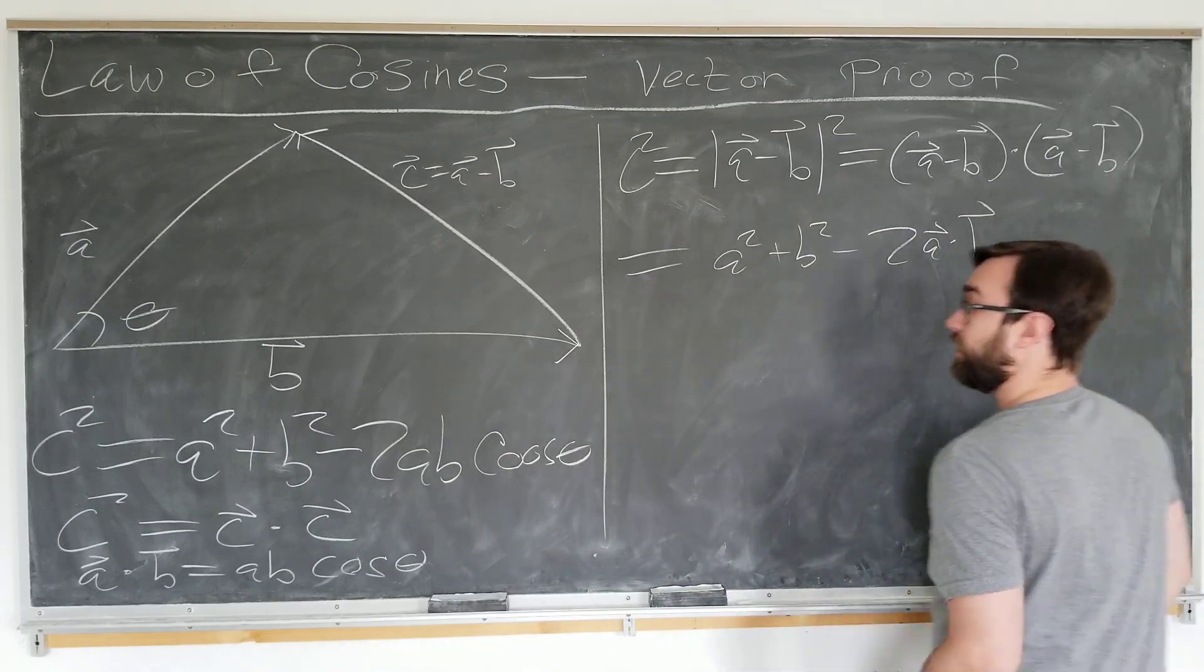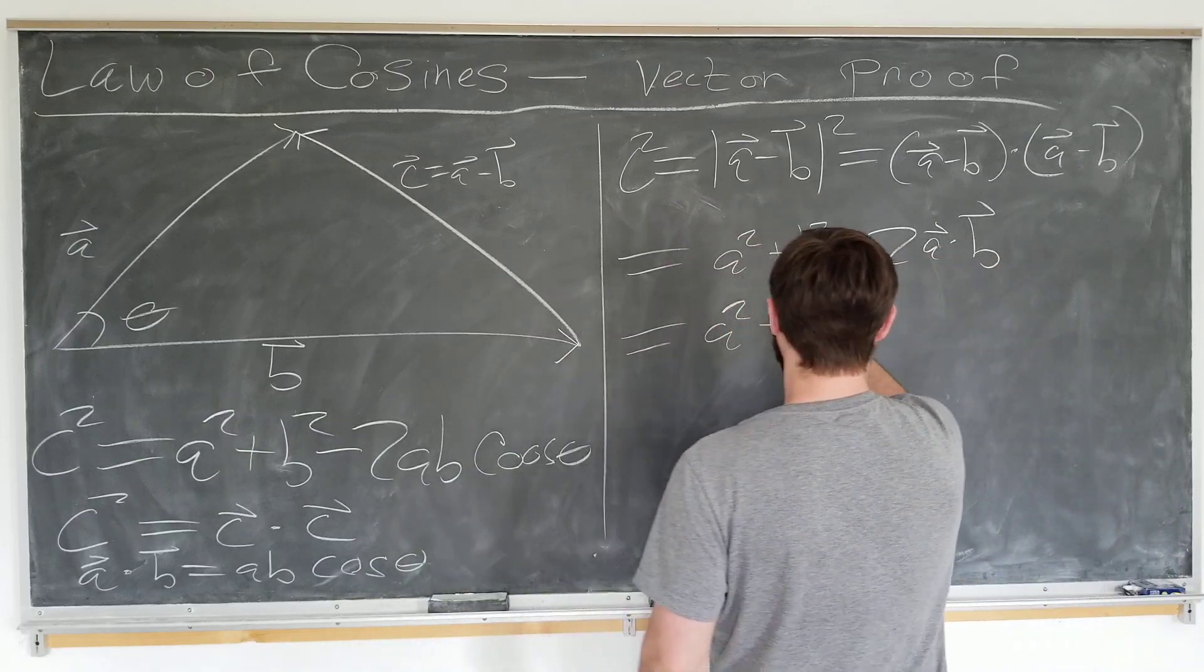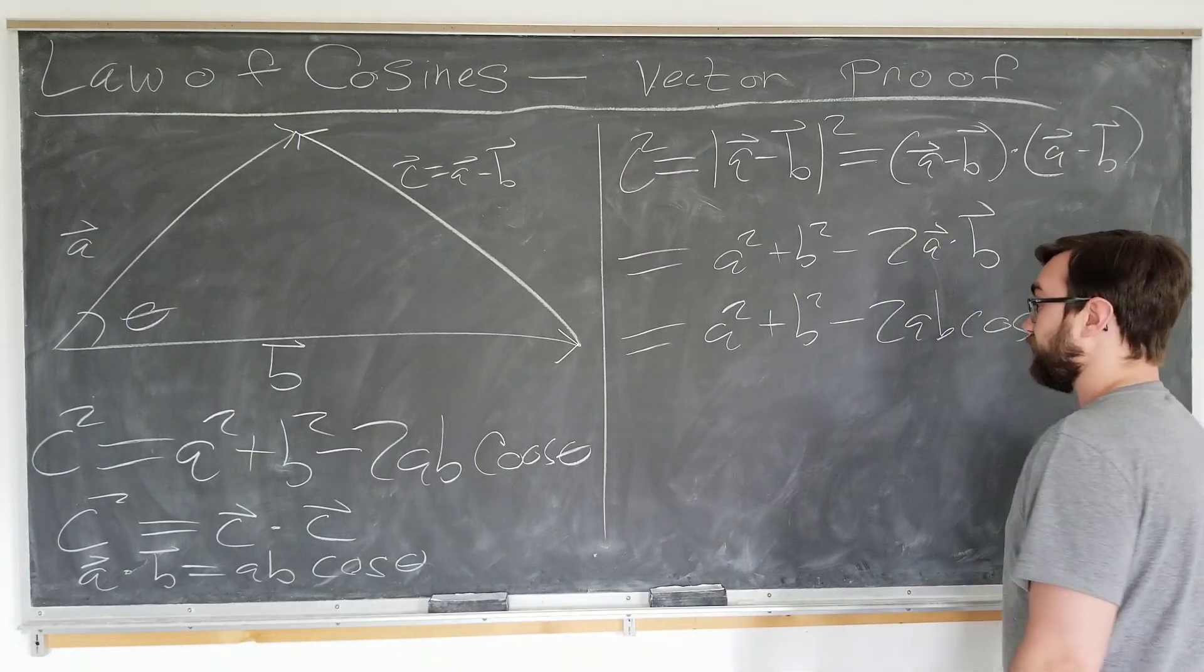Go ahead and use—I'm going to write down here, just a squared plus b squared minus 2ab cosine theta, exactly what we wanted.